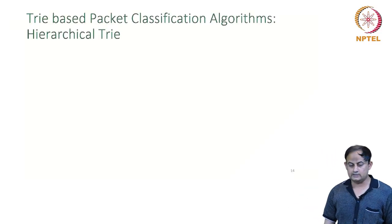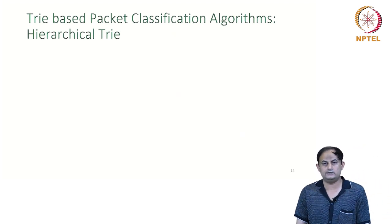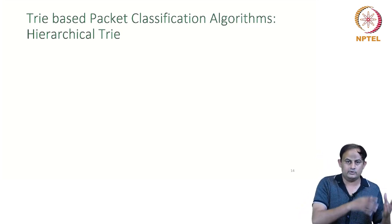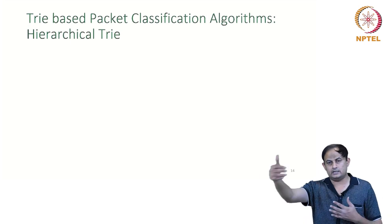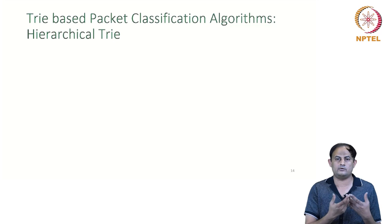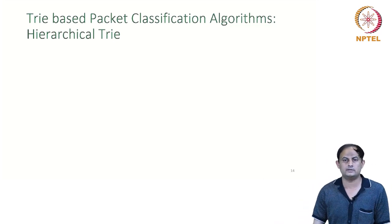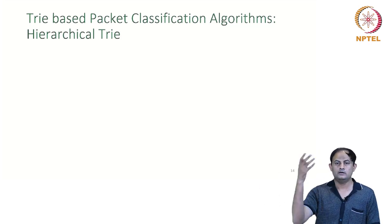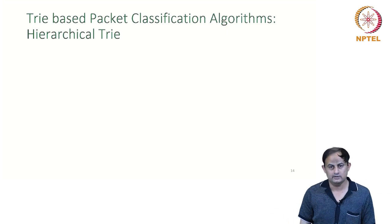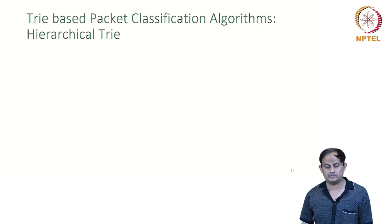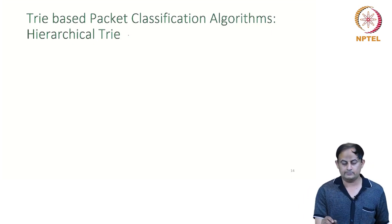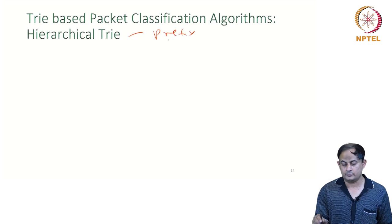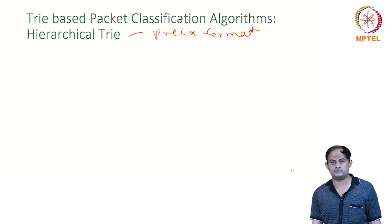With that background in mind, let us study the first data structure called the hierarchical trie. We understood that trie-based algorithms or software implementations are going to work better for the lookup operation. Can I extend the same thing for the classifier as well? The classifier also has rules in prefix format. Assuming all the fields are expressed in prefix format, we can use this kind of trie-based algorithm.